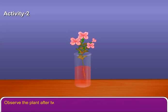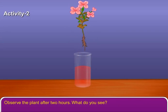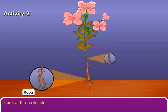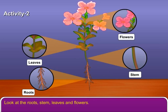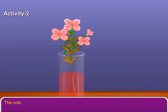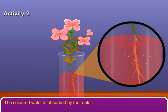Observe the plant after two hours. What do you see? Look at the roots, stem, leaves and flowers. All of them are colored. How? The colored water is absorbed by the roots and is conducted up to the stem, leaves and flowers.